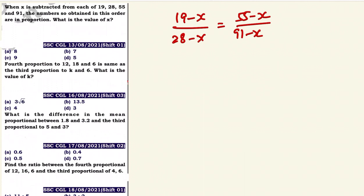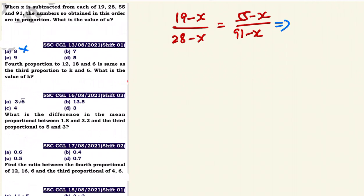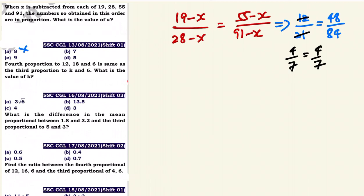Since we know the value of X, we can substitute the options directly. Trying option A gives us 8. Checking option B with X equals 7: we get 19 minus 7 equals 12, 28 minus 7 equals 21, 55 minus 7 equals 48, 91 minus 7 equals 84. Simplifying 12 to 21 gives 4 by 7, and 48 to 84 also gives 4 by 7. So option B is the right answer.